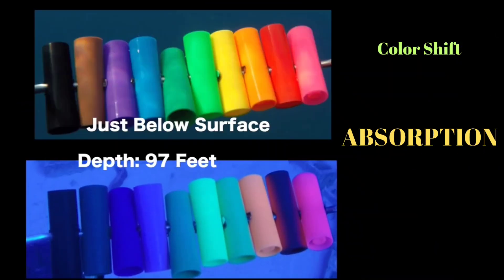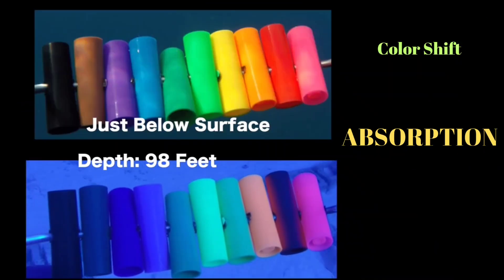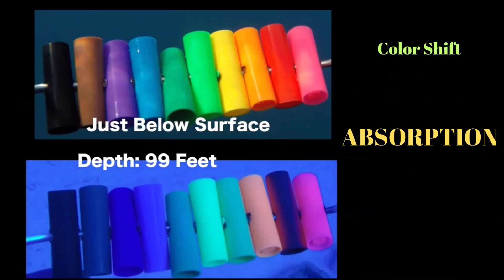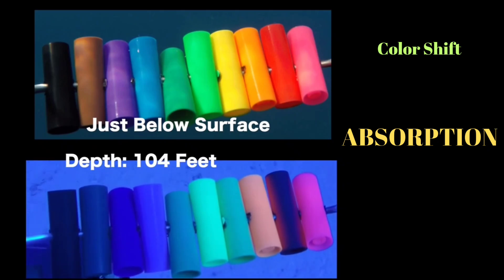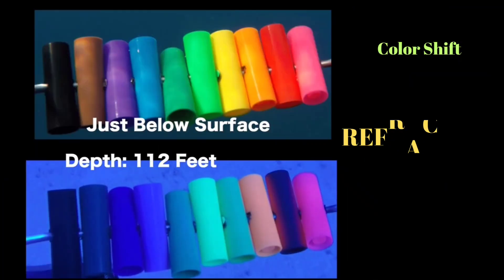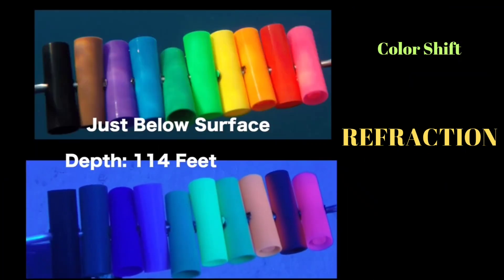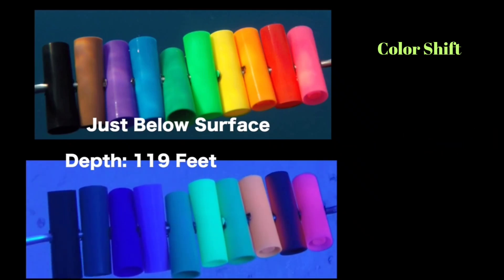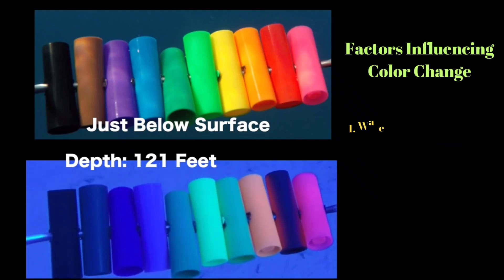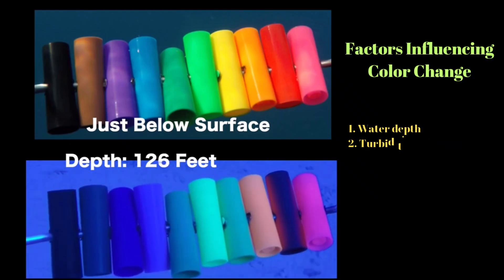The second factor is absorption. Water absorbs longer wavelengths like red, orange, and yellow, making objects appear more blue and green. Third is refraction — bending of light changes the apparent color. Now let's see the factors which influence the color change.